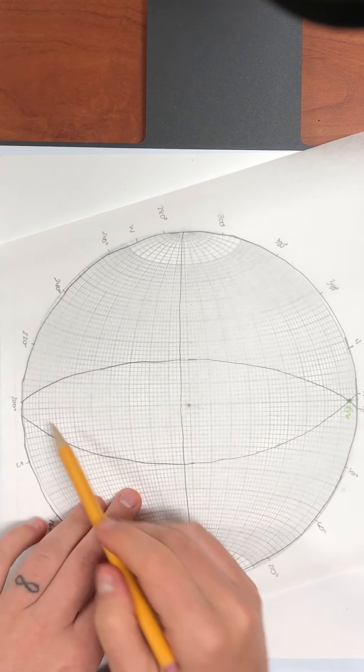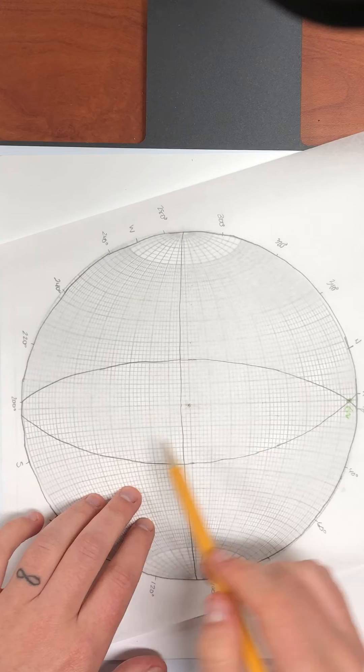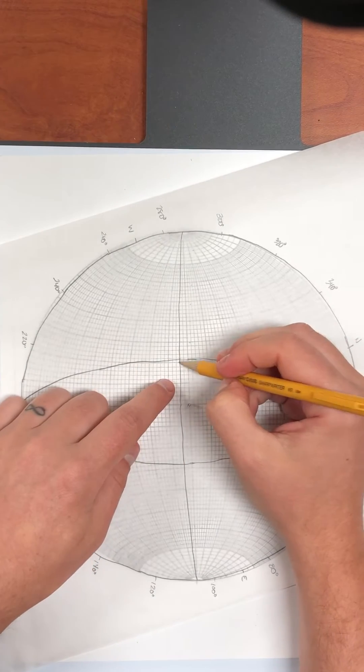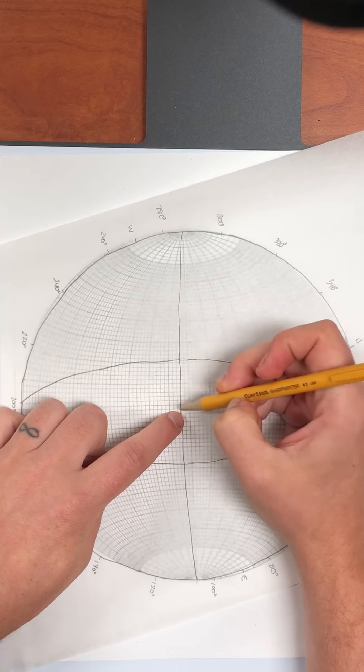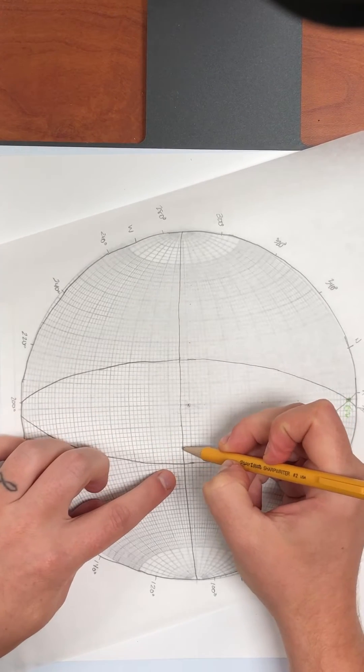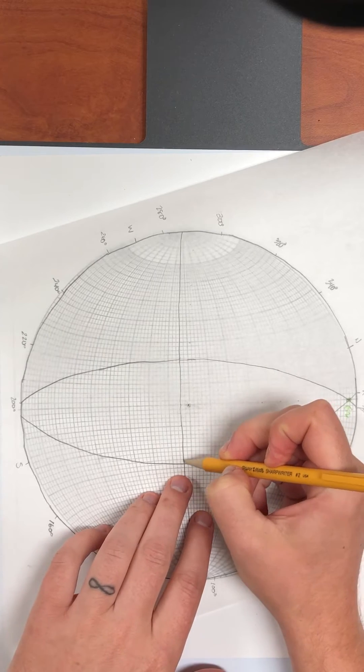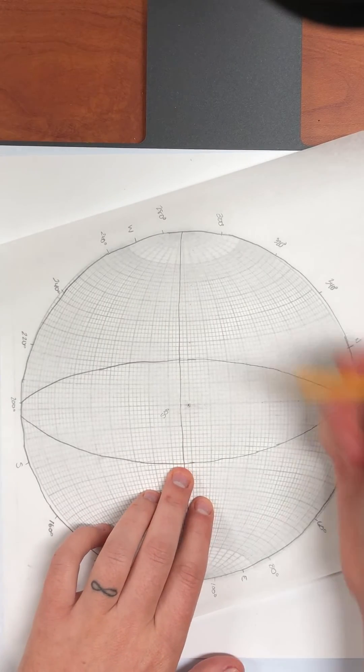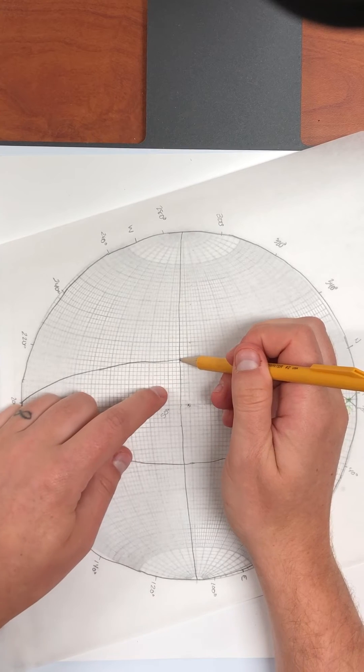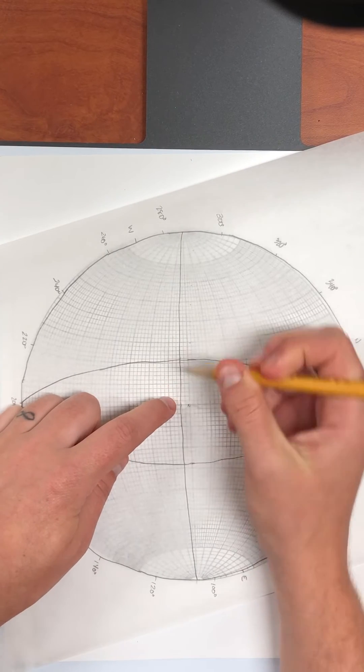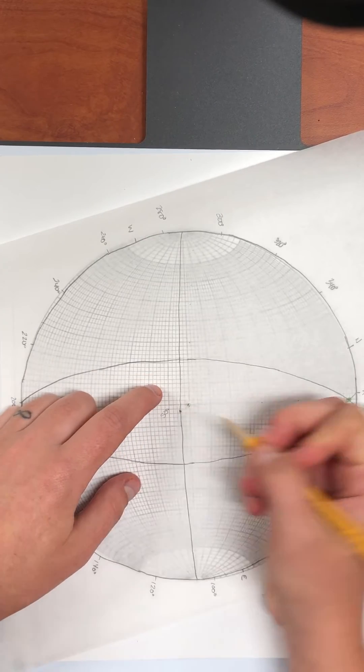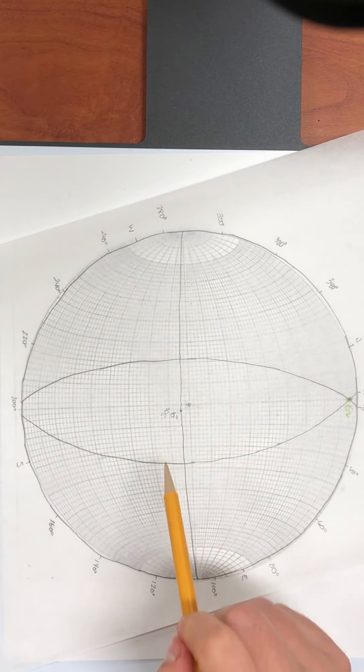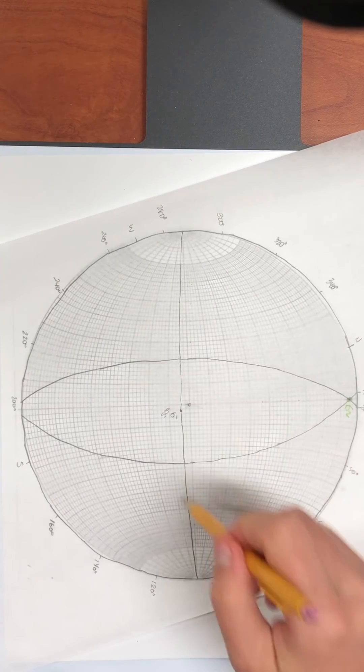Now sigma one is going to bisect the acute angle between the fault planes. So this angle right here is pretty small and we can actually count through here and measure the degrees. So this fault or this angle, the angle between the two fault planes is about 12, 22, 32, 42, 50, about 50 degrees. And so we're going to cut that angle in half, which is 25. And we're going to count over 25 to put our point. So maybe 2, 12, 22, 24, 25 is about right there. And that's going to be sigma one. That's the principal stress that's bisecting the acute angle here.